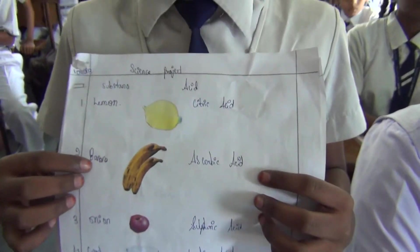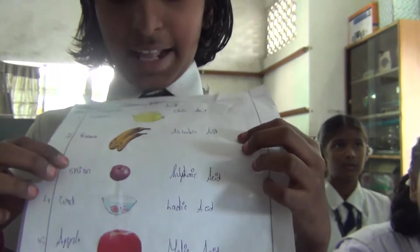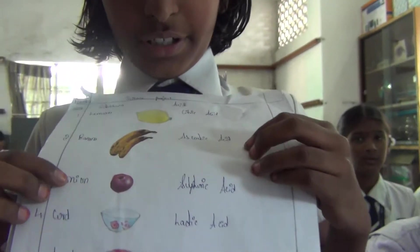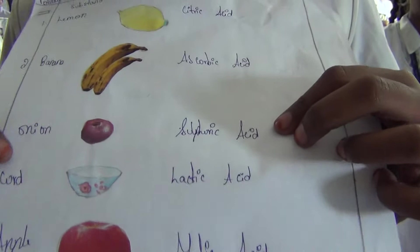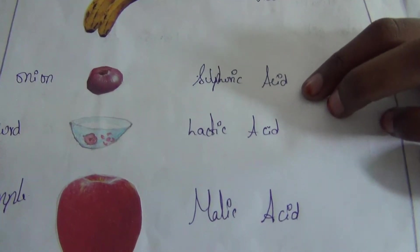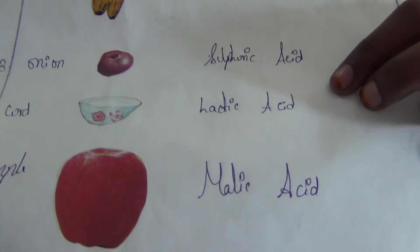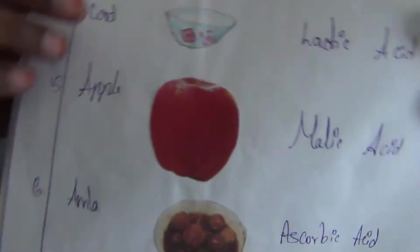Lemon — citric acid. Banana — ascorbic acid. Onion — sulfuric acid. Curd — lactic acid. Apple — malic acid. Amla — ascorbic acid.